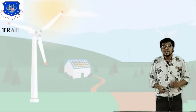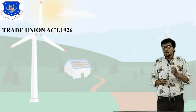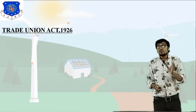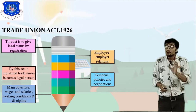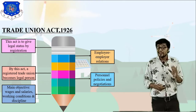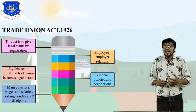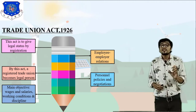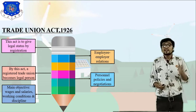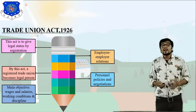Moving forward to the Trade Union Act. What do you understand by a trade union? A trade union gives legal status to a person by registration — this is very important. The Trade Union Act 1926 gives legal status through registration, and by this act a registered trade union becomes a legal person.